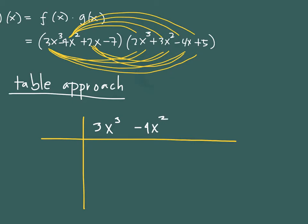4x². 2x is positive, so just write 2x. Minus 7 means negative 7, so write negative 7. And then vertically, you copy every term of the second expression. And that is 2x³, a 3x², a negative 4x, and then a 5.